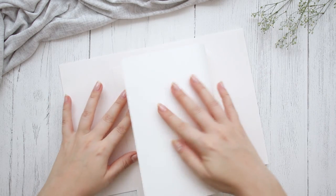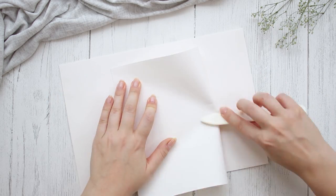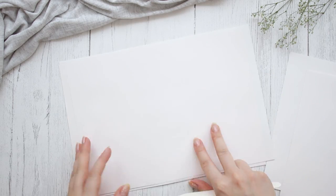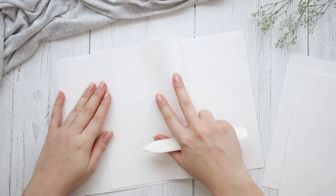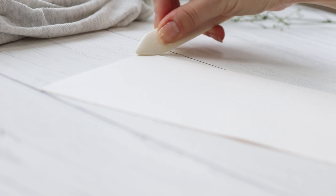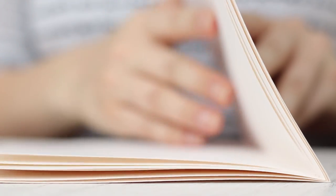Then start folding every page in half. I'm using a bone folder for this but you can use anything with a dull edge, for example a ruler or a butter knife. Insert the pages into each other making sure that they align properly and then set them aside.